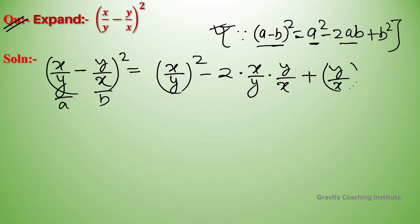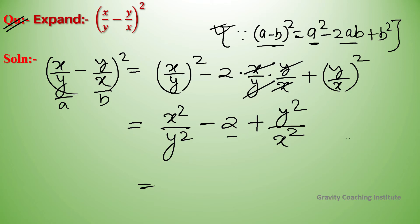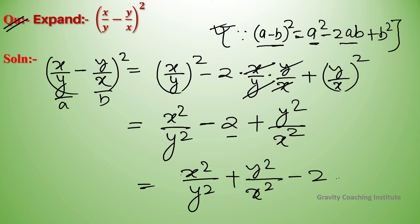This equals x square upon y square minus 2, since x and y cancel in the middle term, plus y square upon x square. Writing the constant term last, the result is x square upon y square plus y square upon x square minus 2, which is the required answer.